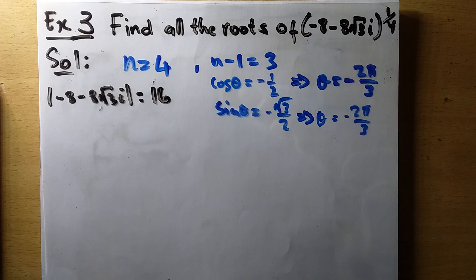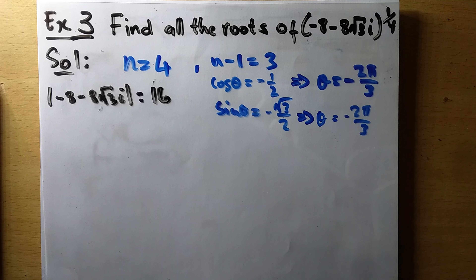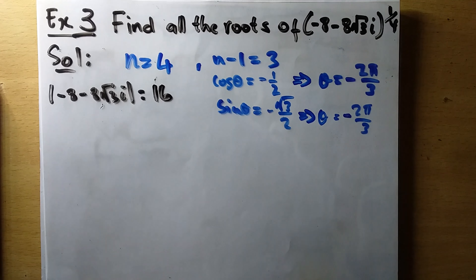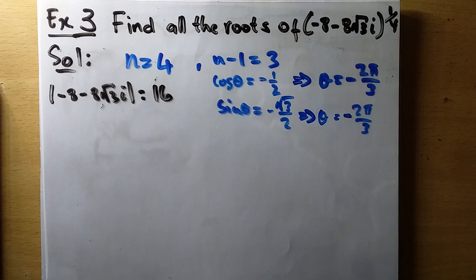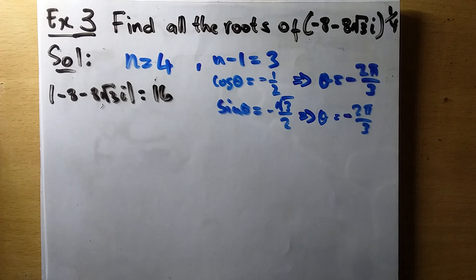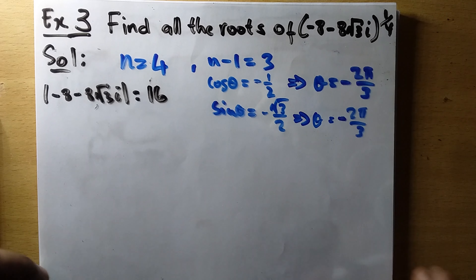Both sine and cosine are negative, which means they lie in the third quadrant — that's the only quadrant where both sine and cosine are negative. So our angle θ = -2π/3. Let us continue and write our complex number in exponential form.